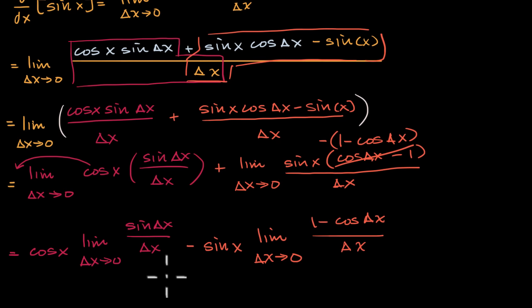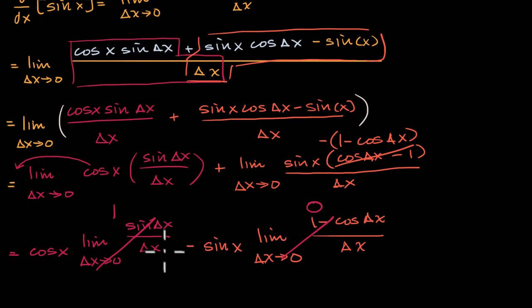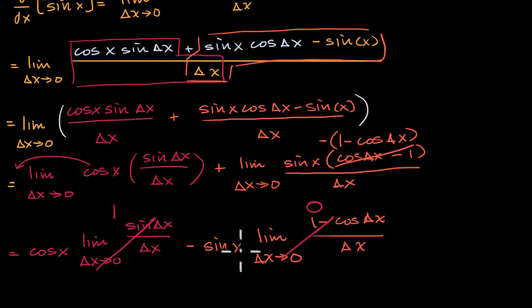Now, in other videos we have shown using the squeeze theorem, or sometimes known as the sandwich theorem, that the limit as delta x approaches zero of sine of delta x over delta x equals one. And we also showed in another video that the limit of one minus cosine of delta x over delta x is equal to zero. These are really useful limits to know in general in calculus. So what we are left with is cosine of x times one minus sine of x times zero, which equals cosine of x. And you are done.